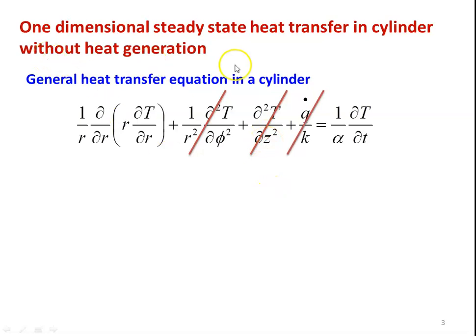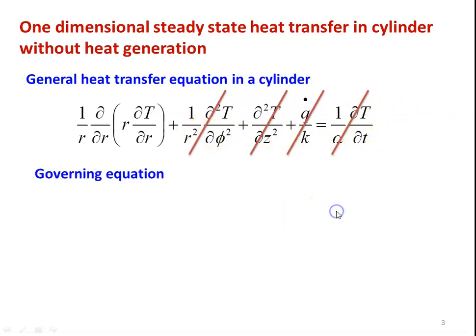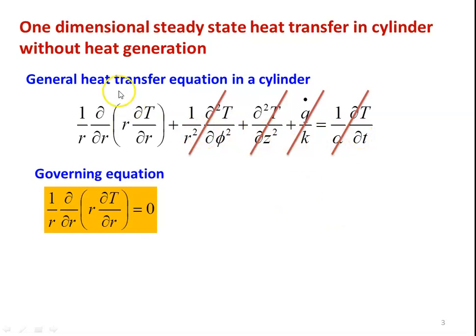Without heat generation, the q-dot term becomes zero. For steady state heat transfer, the temperature variation with respect to time is equal to zero. Removing all these terms, the governing equation for one dimensional steady state heat transfer in a cylinder without heat generation is: 1/r · ∂/∂r(r · ∂T/∂r) = 0.